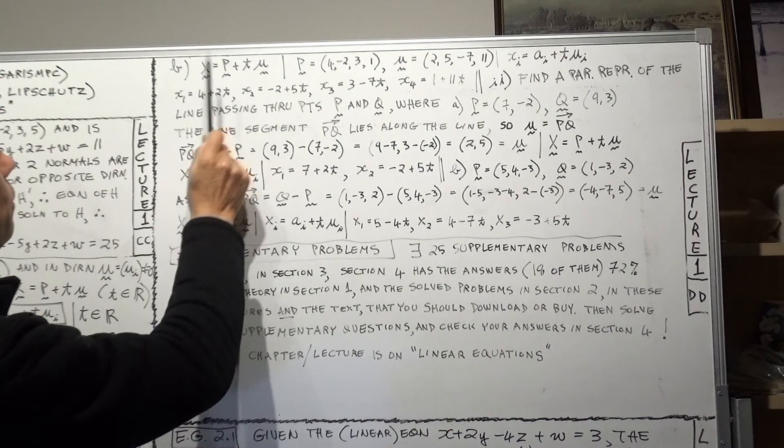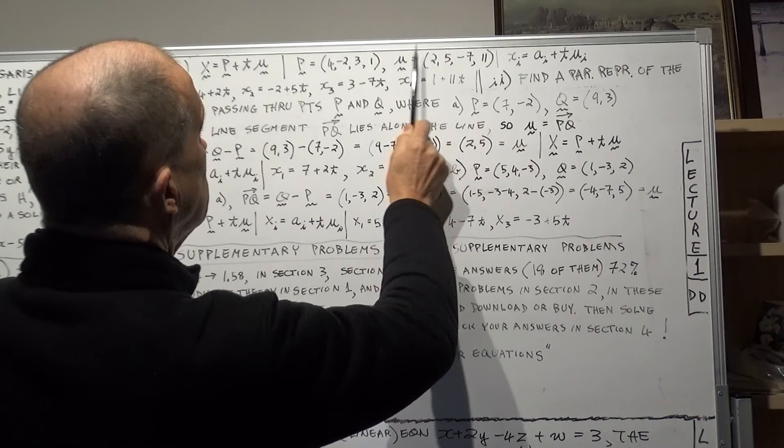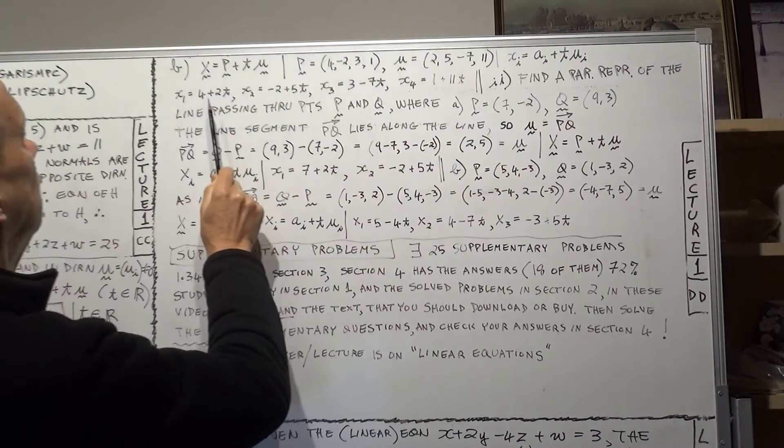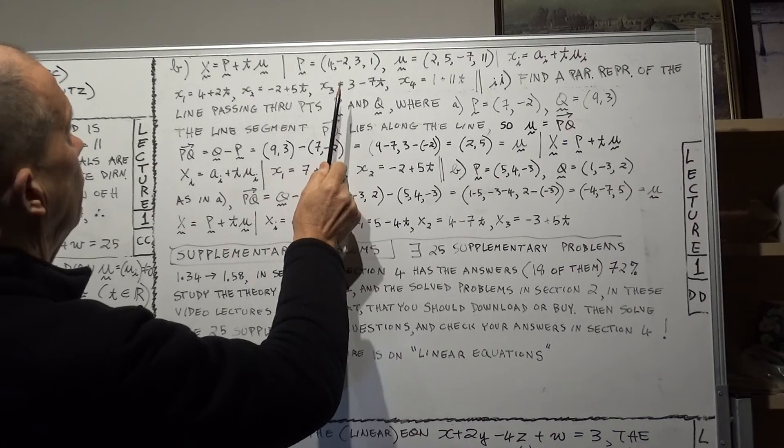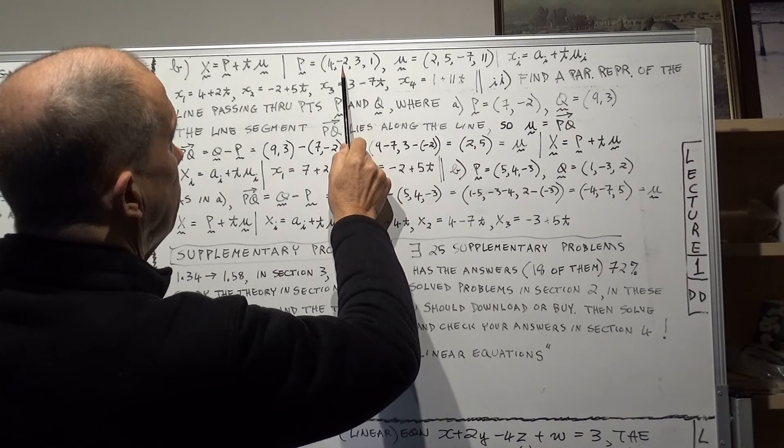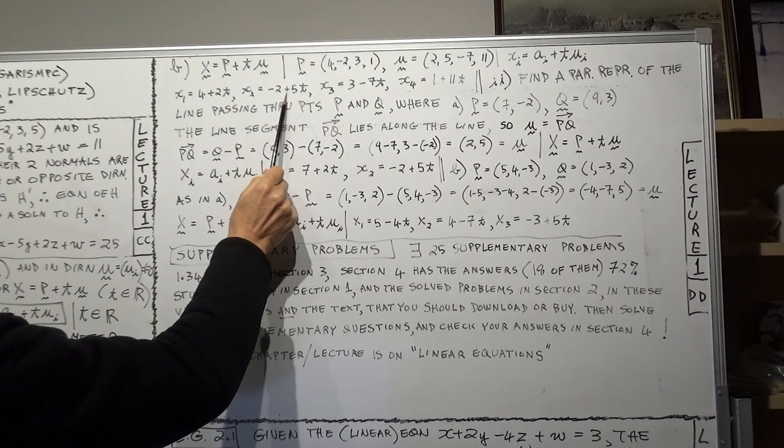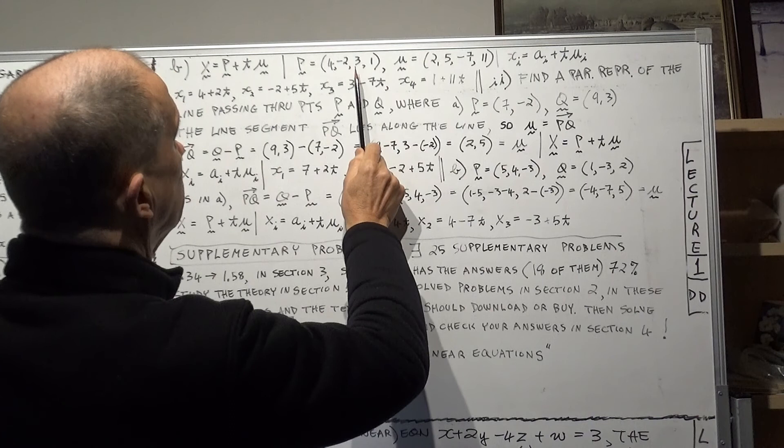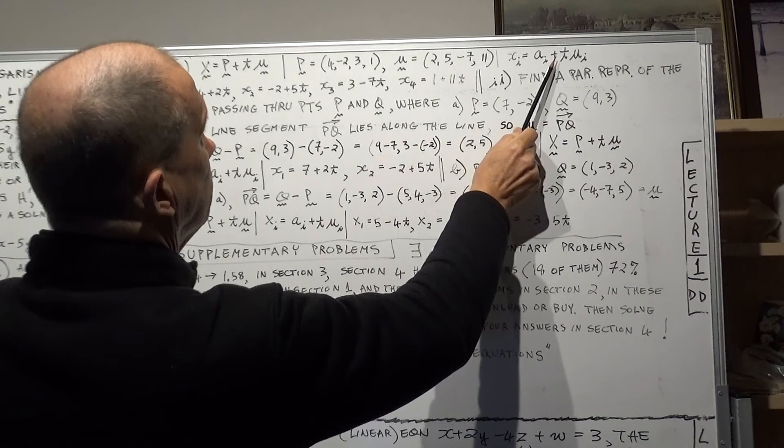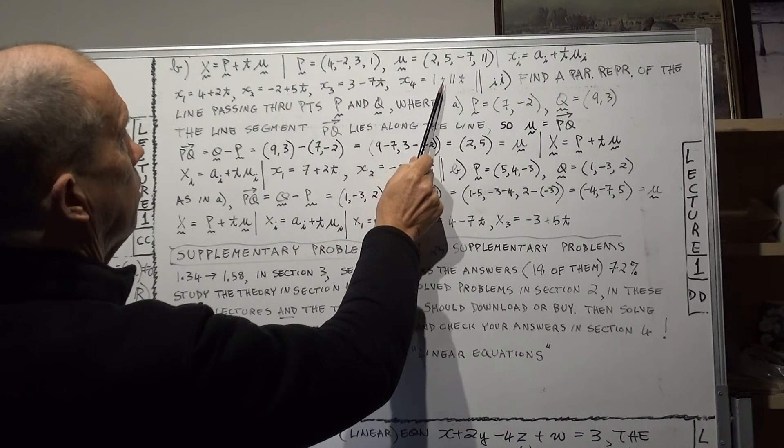So let's find it for the first component. So X1, that'll be A1, which is 4, plus T U1, that's 2. So X1 will be 4 plus 2T. And similarly, the second component, this will be U2, sorry A2, and that'll be U2. It'll be minus 2 plus 5T. And similarly, the third one, it'll be 3 minus 7T. And the fourth one, it'll be 1 plus 11T. Where is the row here? 1 plus 11T. Okay.